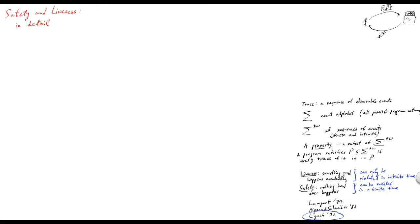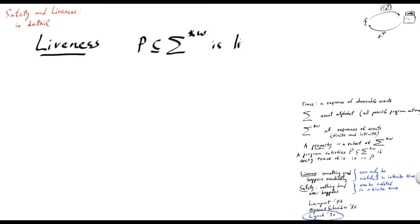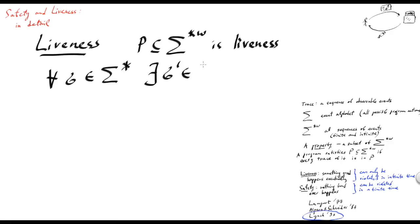Now, what about liveness? How do we define liveness formally? We would say that the property P is liveness if for all finite traces sigma, there exists an extension such that we eventually end up with a trace in the property. In other words, no matter where we start, there is always a chance to get something good in the future.